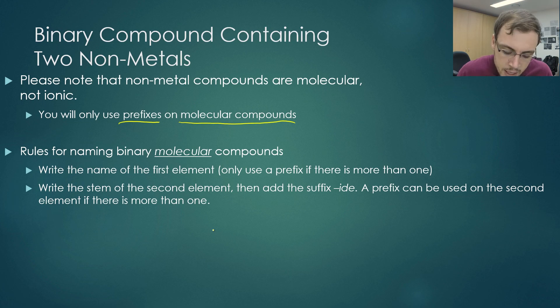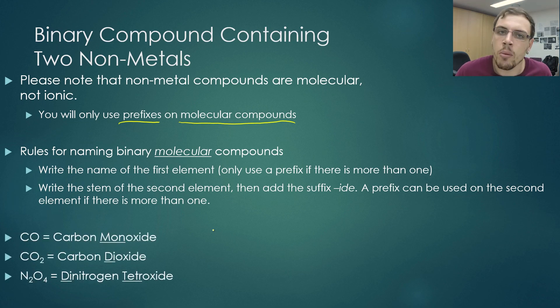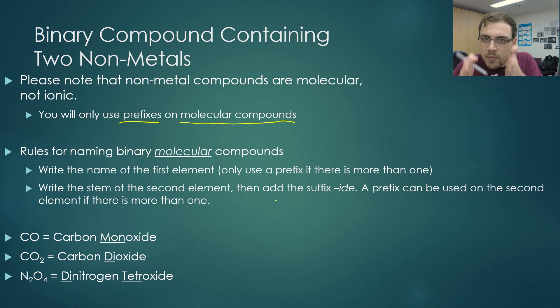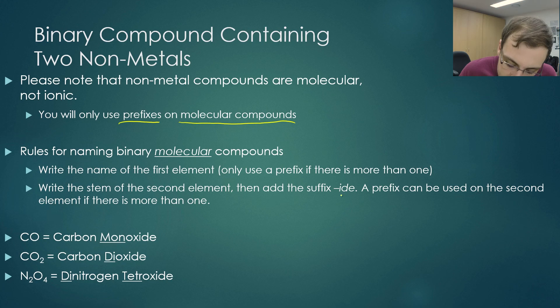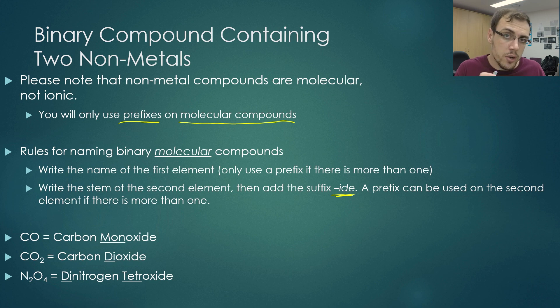Let's have a look at naming a binary molecular compound. The first thing you do is you write the first element, and you only use a prefix if there is more than one. If we look here at our first example, we only have one carbon, so we simply write carbon. What we then do is we write the stem of the second element. The stem is the middle of the word, and then we add IDE to the end. A prefix on the second word, or the second element that's bound here, can be used if there is more than one of that particular element.